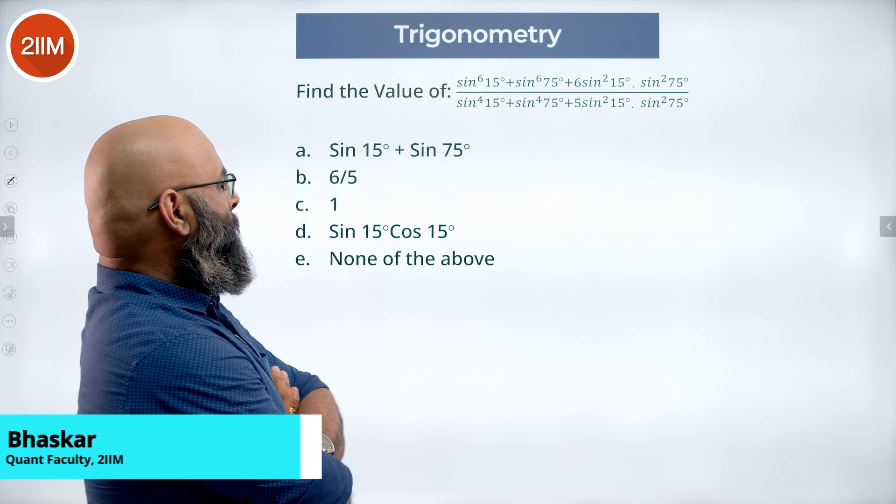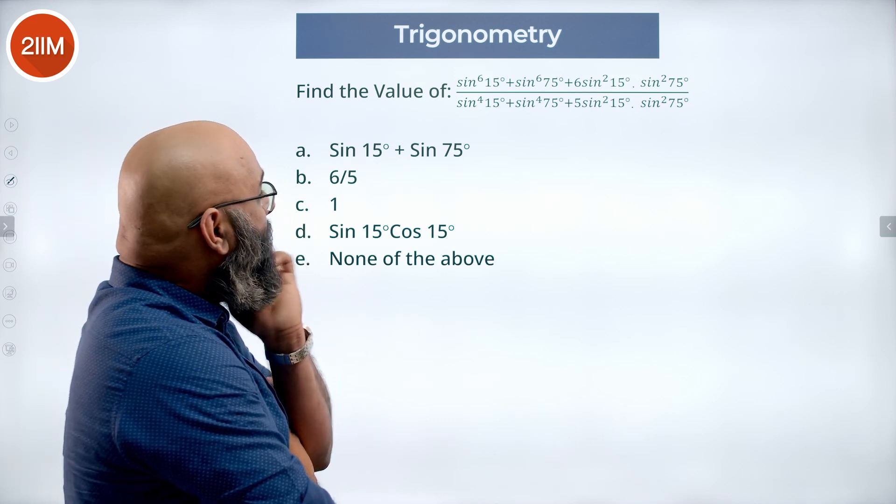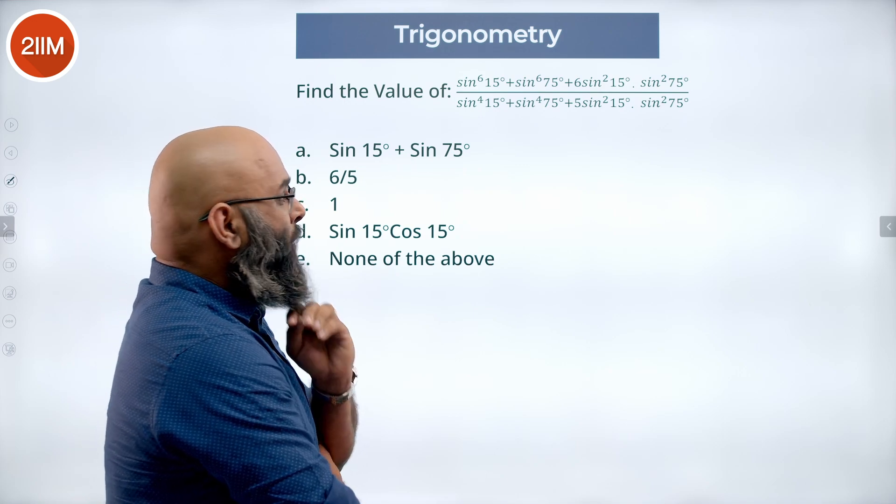Find the value of the trigonometric expression. So we have an expression that is given in terms of sin 15 and sin 75 with various powers to it.